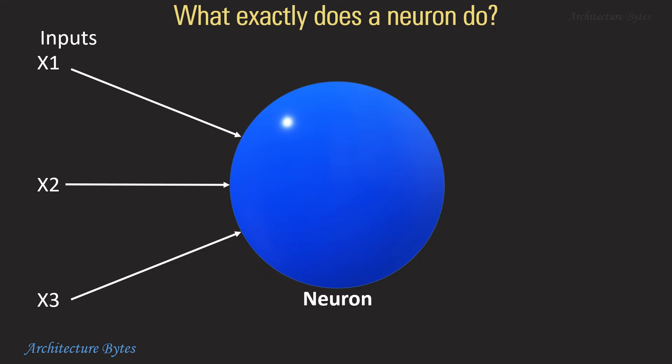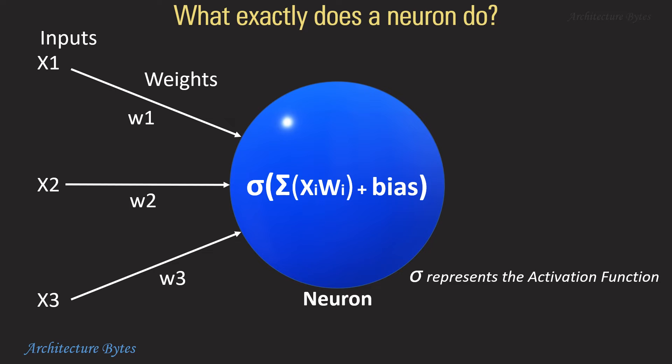Assume X1, X2 and X3 are inputs to the neuron which are simply numerical values. And W1, W2 and W3 are weights for each of the corresponding input connections. Every input is multiplied with its corresponding weight and all the resulting weighted inputs are summed up.